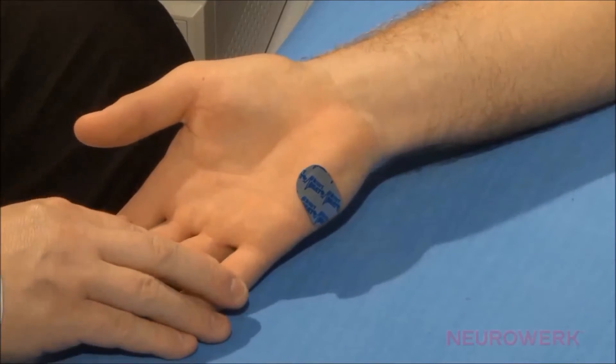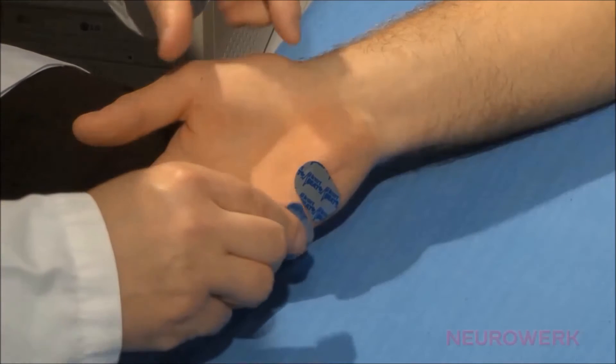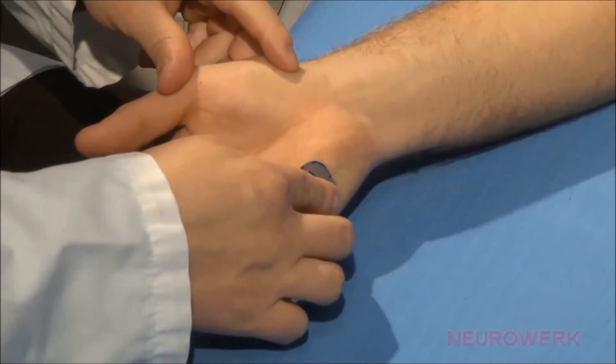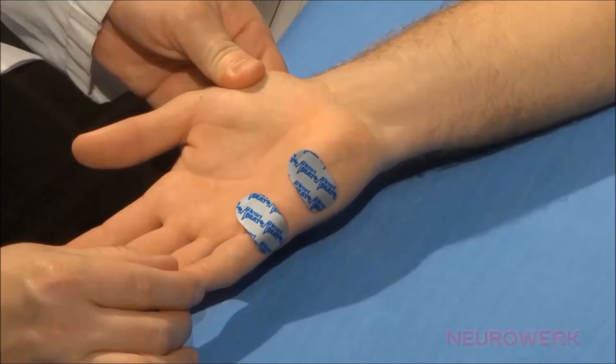The precise electrode position on the hypothenar is determined by abducting the little finger maximally. The indifferent or reference electrode is attached to the anterior little finger joint.